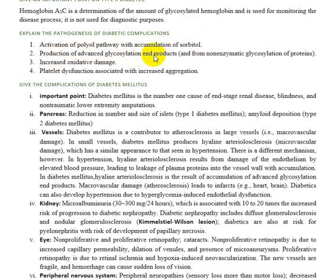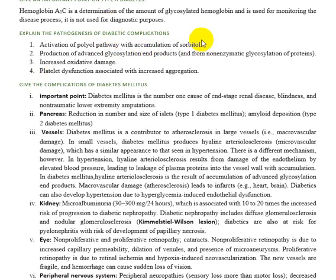The different mechanisms through which diabetic complications arise are: activation of the polyol pathway with accumulation of sorbitol; production of advanced glycosylation end-products from non-enzymatic glycosylation — excess glucose in the blood causes non-enzymatic glycosylation where glucose binds with blood vessels; increased oxidative stress and tissue damage; and platelet dysfunction with increased platelet aggregation.